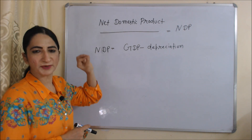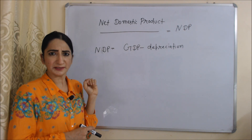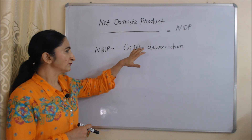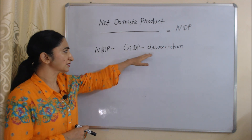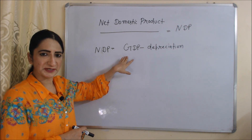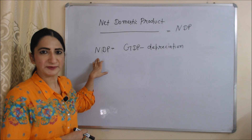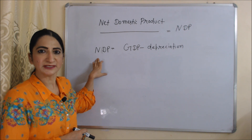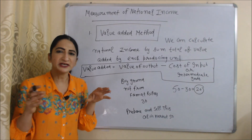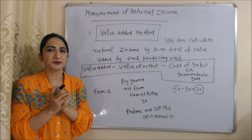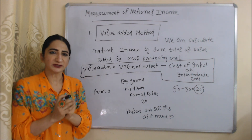Next is Net Domestic Product — in short, NDP. When we subtract depreciation from GDP it becomes NDP, which is the Net Domestic Product. Now we are going to talk about the measurement of national income.